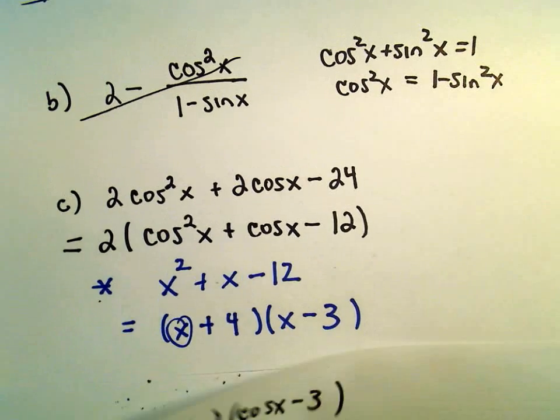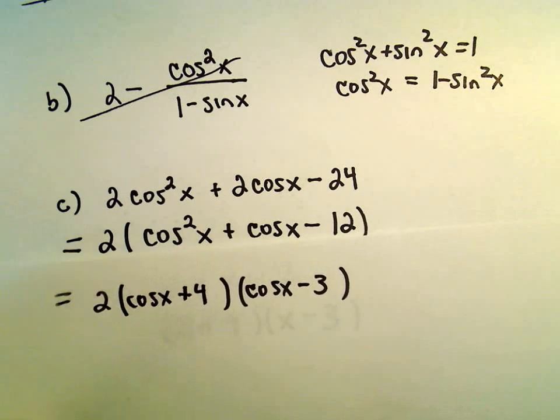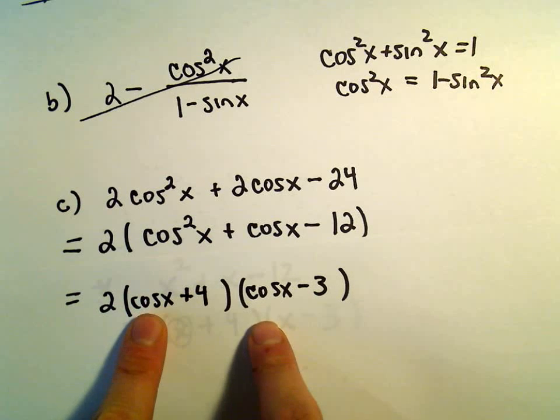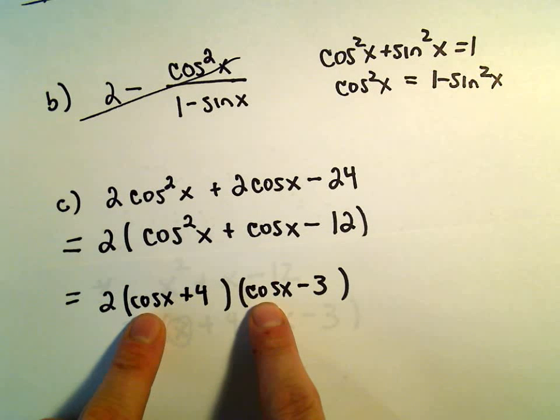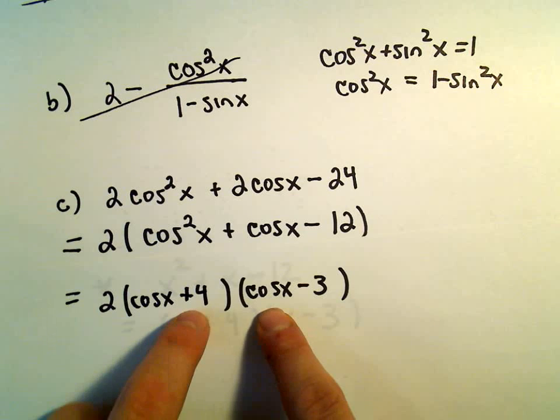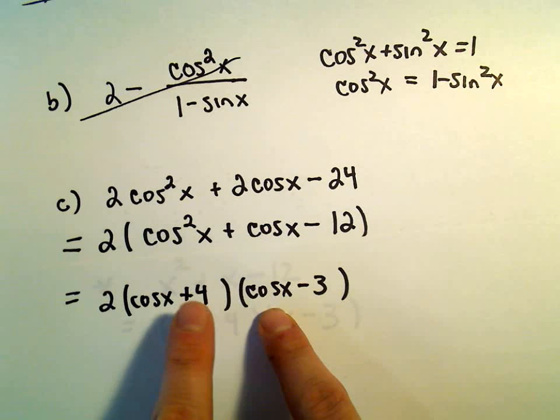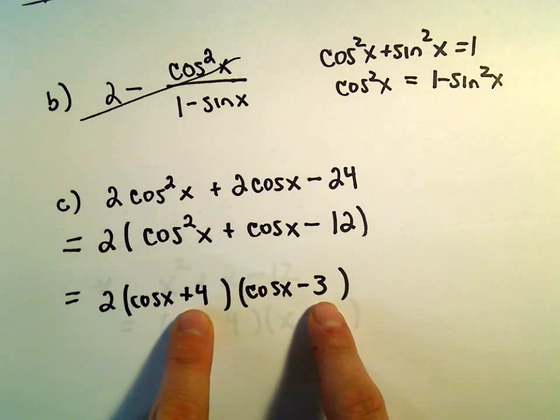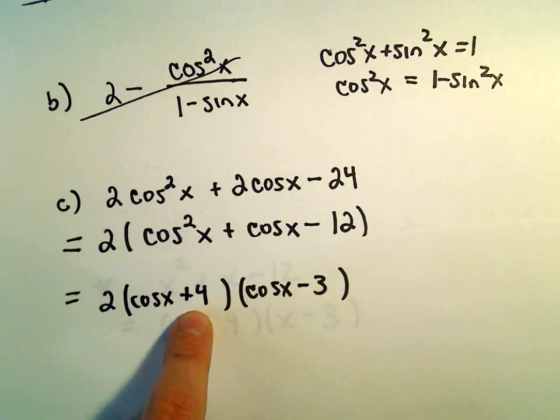Notice if you distribute all this out, we'll get cosx times cosx, which is cos²x. We'll get -3cosx + 4cosx, which gives us our positive cosx. And positive 4 and negative 3 will leave us with negative 12.